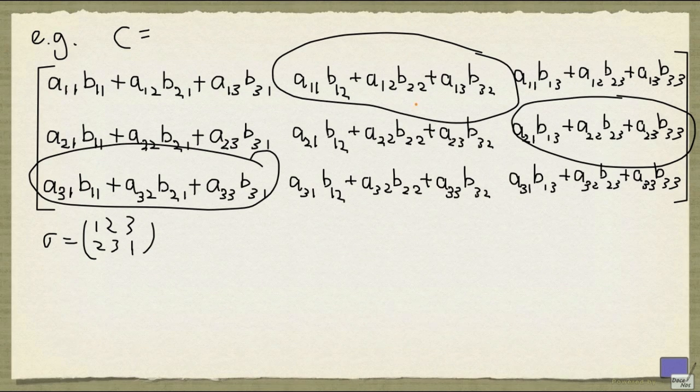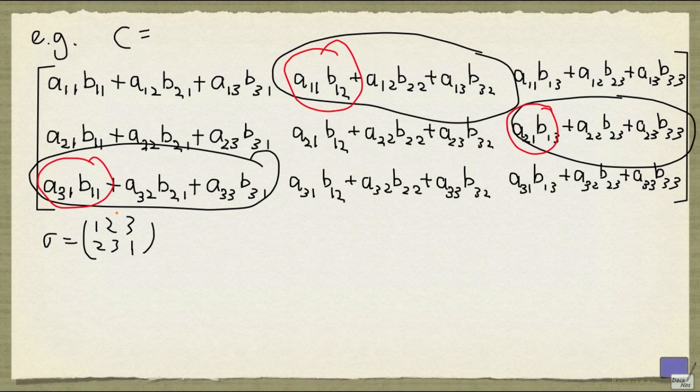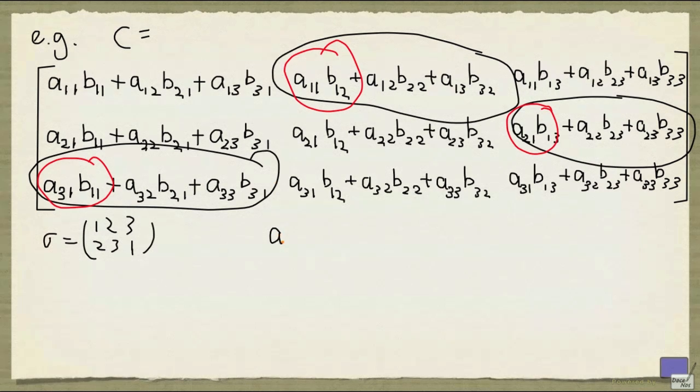So again, if you expand out the product, you get 27 terms, and one of them will be coming from this times this times this. Now the number of inversions here is 2, so it's going to be a positive term. And if I write down the product of those things circled in red, I get this: a11 b12, a21 b13, and a31 b11.